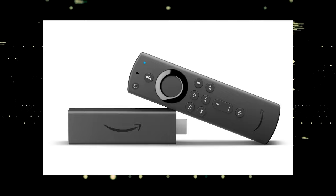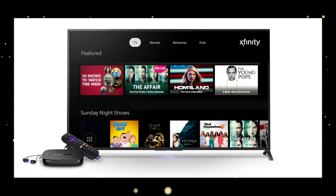The way to give your TV the ability to install the Xfinity Stream app is to get a streaming device to plug into your TV. I recommend getting a Roku stick or an Amazon Fire Stick. Both of these media streaming players have the capability of downloading the Xfinity Stream app.